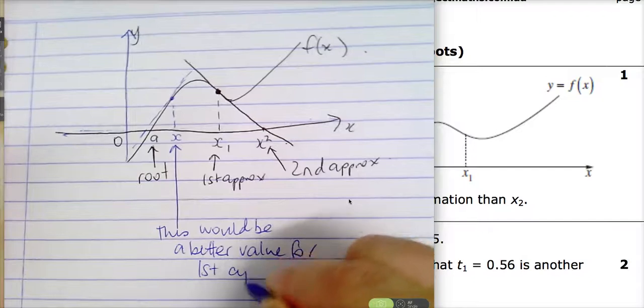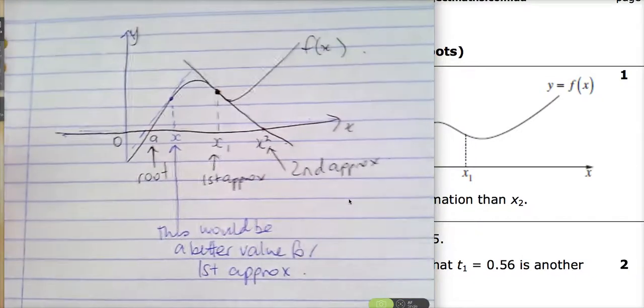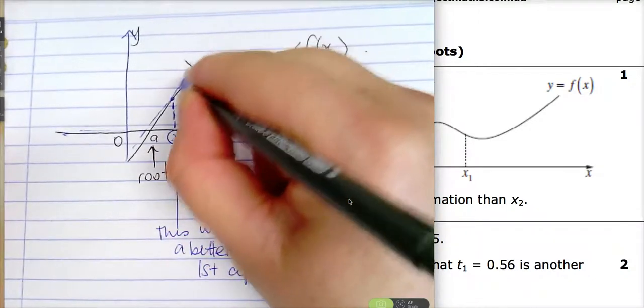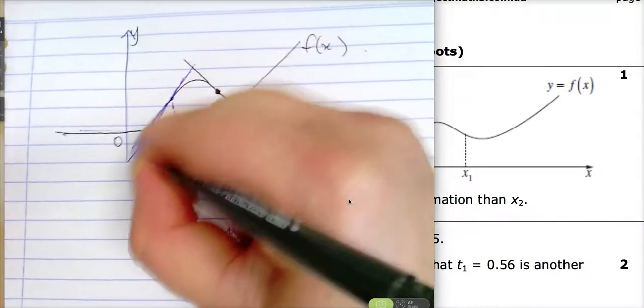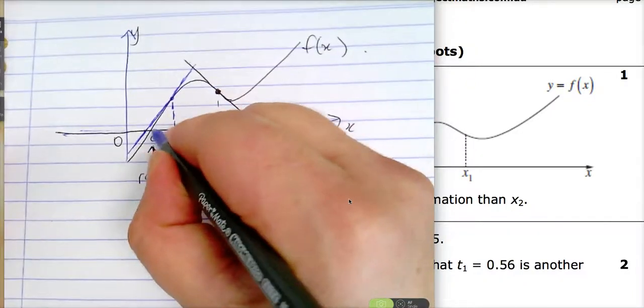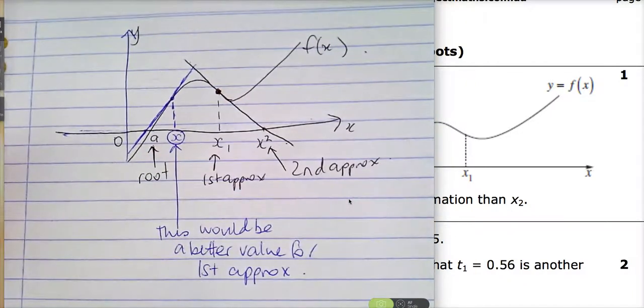Can you see if you do a tangent there, you'd get a good approximation to the root. So basically what's happened here, this would be a better value for your first approximation. Does that make sense? So that value there, which I've done in blue, would be a better value because if you look at the tangent there, you're going to end up with a value where it cuts the x-axis is very close to the actual root.